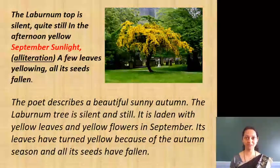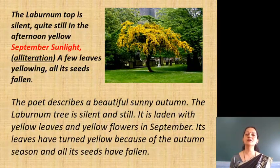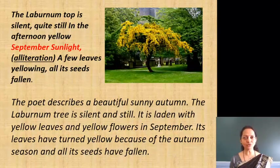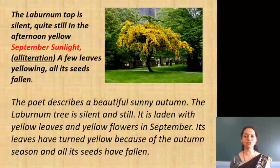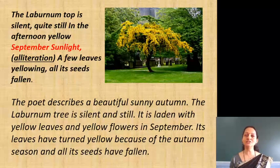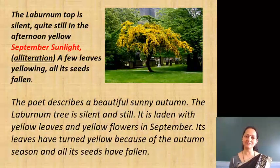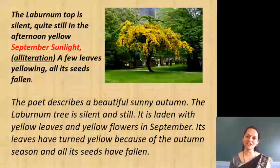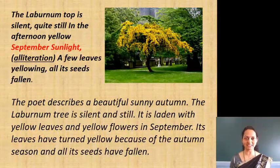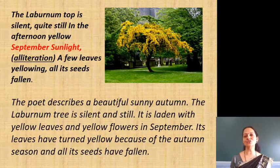Now the poem begins. Figures of speech are marked in red and meanings of difficult words are given in the next slides. 'The laburnum top is silent, quiet, still in the afternoon yellow September sunlight.' Here 'September sunlight' is an alliteration because the 'S' sound is repeated. 'A few leaves yellowing, all its seeds fall.'